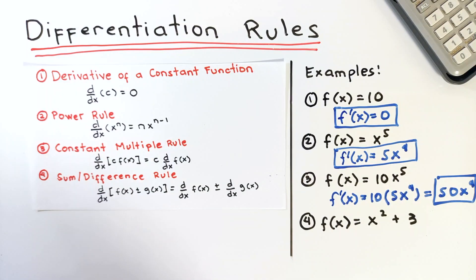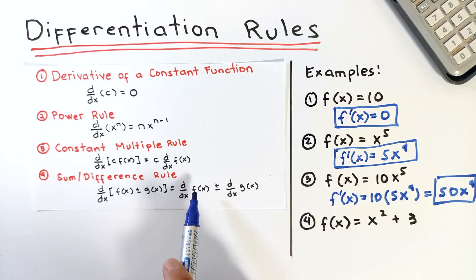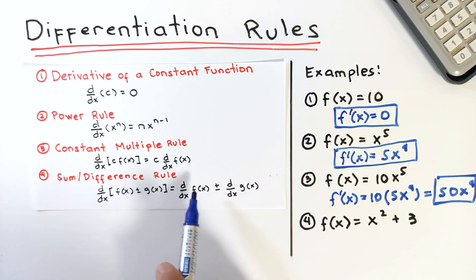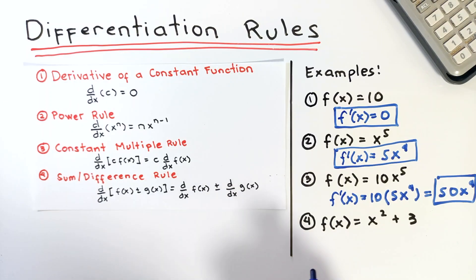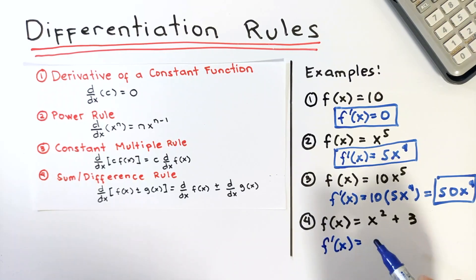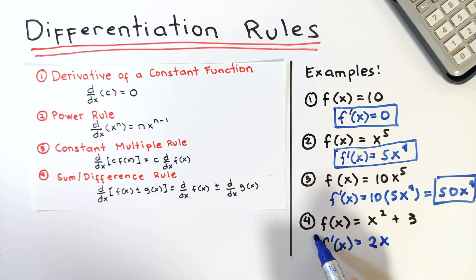Rule number 4: sum or difference rule. The derivative of f plus or minus g is equal to the derivative of f plus or minus the derivative of g. Essentially, the derivative of a sum equals the derivative of its terms, and this is also applicable for the difference. Example: f(x) = x squared plus 3. The derivative is 2x using the power rule, plus the derivative of 3 which is 0. So the final answer is 2x.